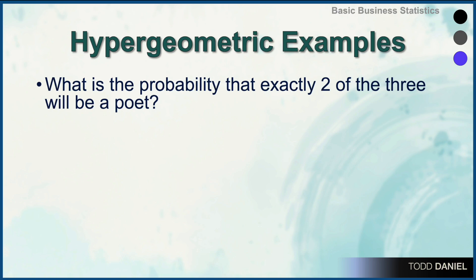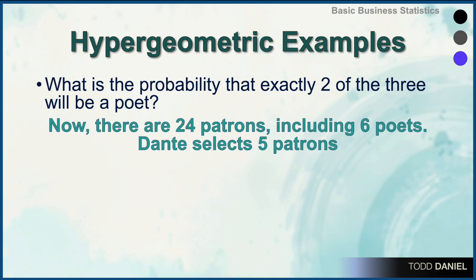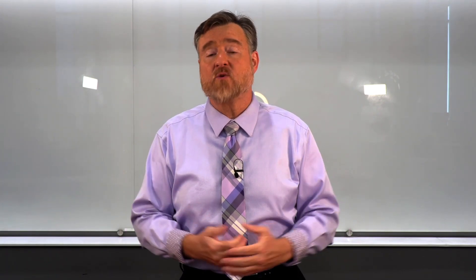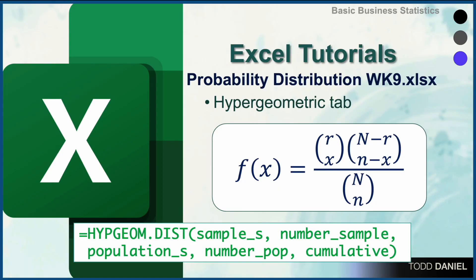Here are some other examples we'll examine using an Excel spreadsheet. What if exactly two of the three people randomly selected will be a poet? Or if we increase to 24 patrons with six poets and Dante selects five, what is the probability that exactly three of the five will be a poet, or that three or fewer will be a poet? Those are the kinds of questions we can answer using an Excel spreadsheet I've created for calculating hypergeometric probabilities.